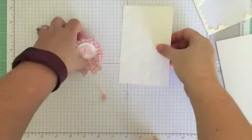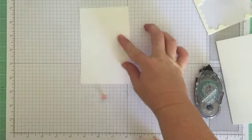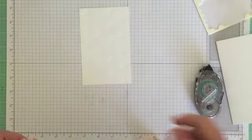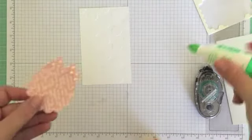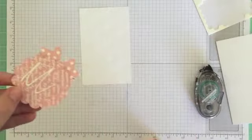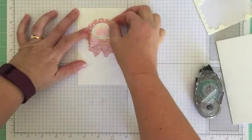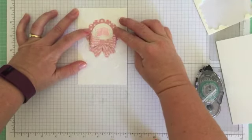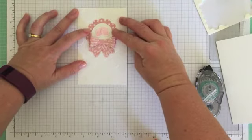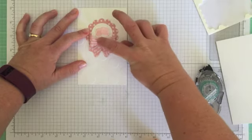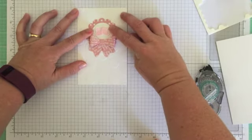So what I'm going to do now is just bring in my piece that we embossed earlier and I'm just going to use Tombow again just because it's quick and easy. And I'm just going to pop that in the middle.